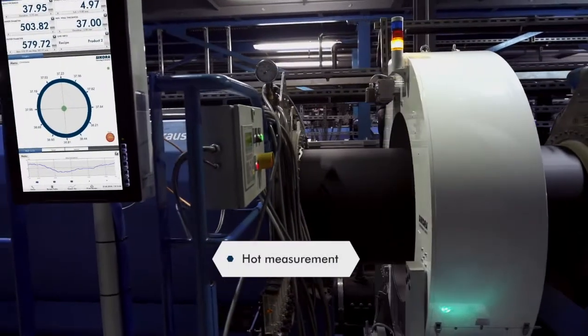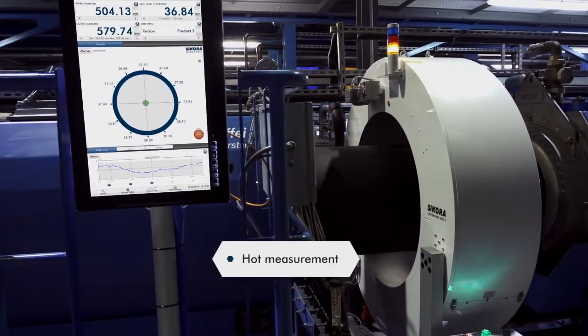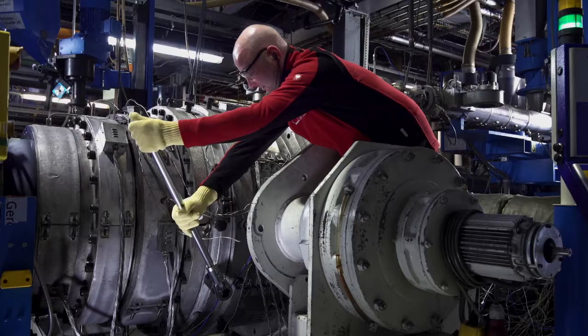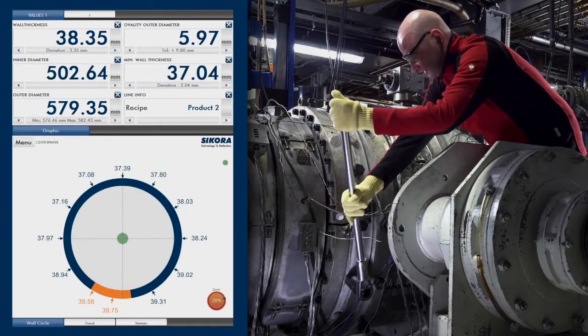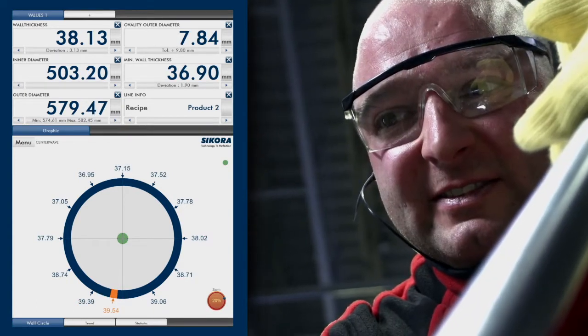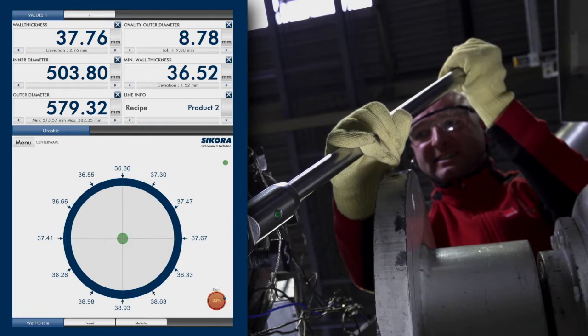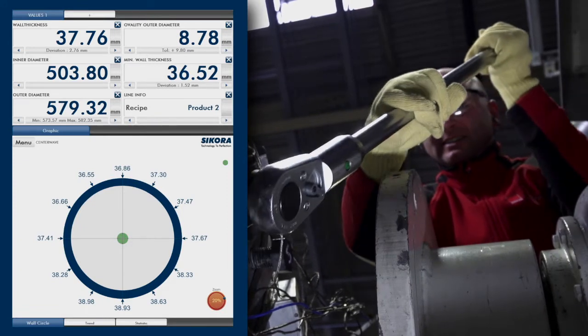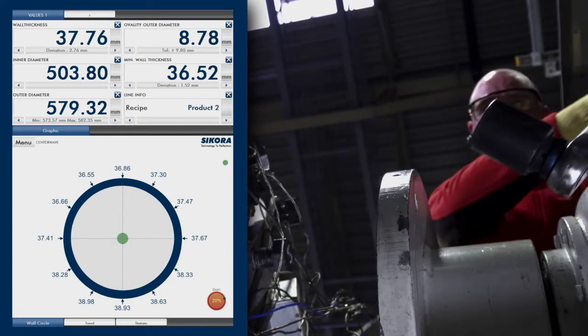The CenterWave 6000 is used for hot measurement, directly after the first vacuum tank. The precise 360 degree real-time measurement enables fast centering of the extrusion tool. Thus, start-up scrap and safety margins can significantly be reduced. This saves material costs.